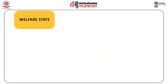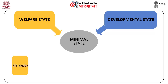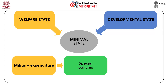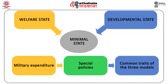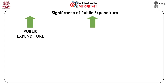Both the welfare and developmental state include the items of the minimal state. Military expenditure and special policies are common traits of the three models, maybe in varying proportions of public expenditure. Being a component of GDP, public expenditure has an immediate impact on it. An increase of public expenditure raises GDP by the same amount, other things being equal.